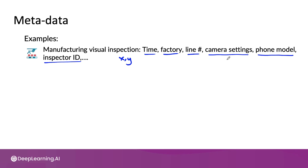If you discover during machine learning development that for some strange reason line number 17 in factory 2 generates images that produce a lot more errors, then this allows you to go back and see what was unusual about line 17 in factory 2. But if you had not stored the factory and line number metadata in the first place, it would have been really difficult to discover this during error analysis. I've found many times when I happened to store the right metadata only to discover a month later that that metadata helped generate a key insight that helped the project move forward.